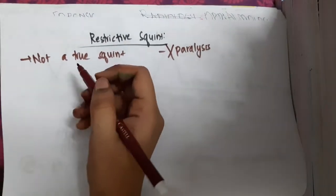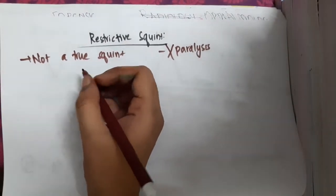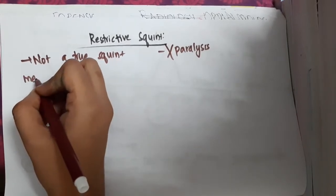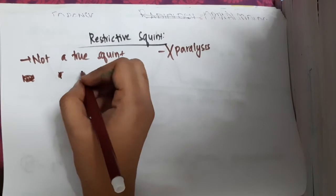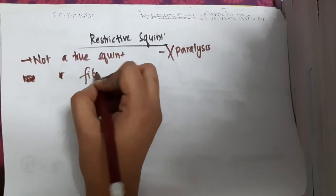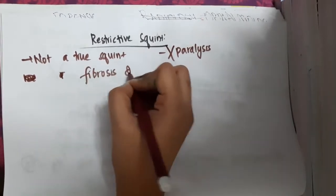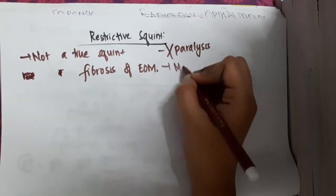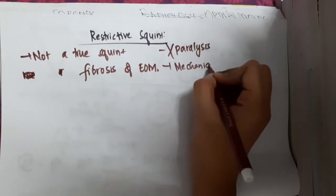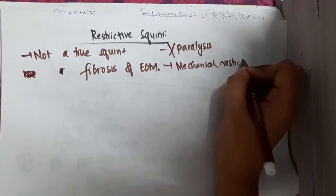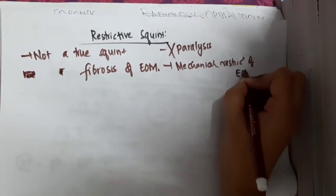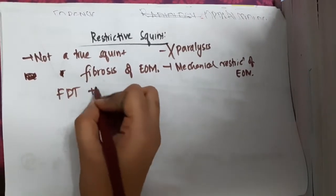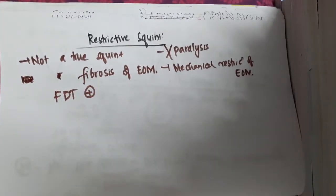The problem in restrictive squint is that there is mechanical restriction of the extraocular muscles. This occurs because of fibrosis of the extraocular muscles, which causes the mechanical restriction. There is a test called the force reduction test, which is positive in restrictive squint.